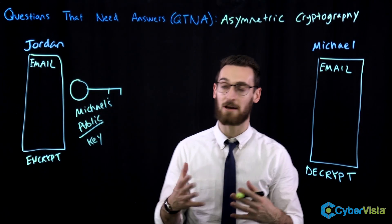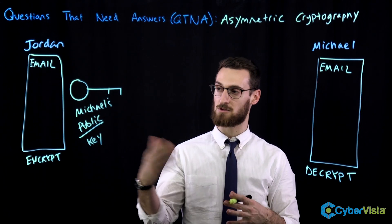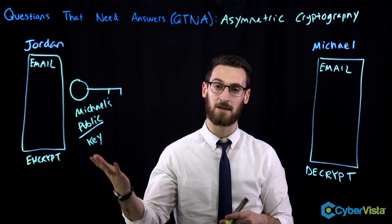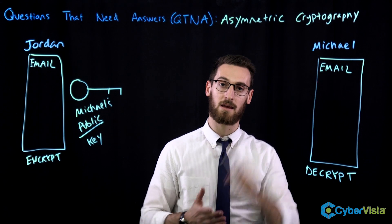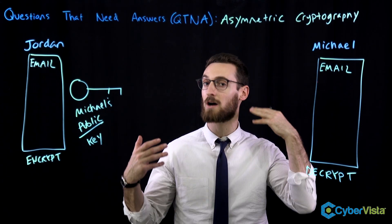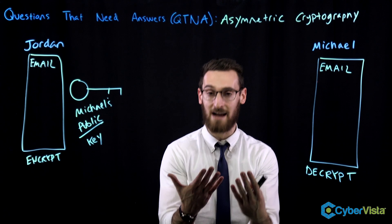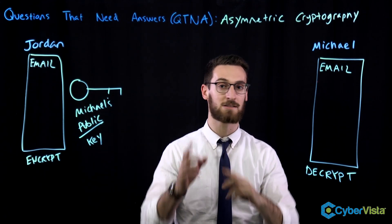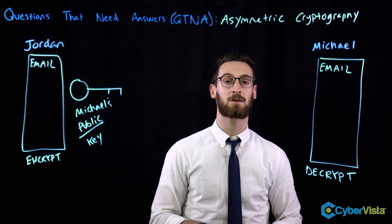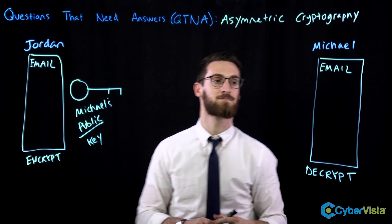Why does this matter? Because if one key encrypts, the other has to decrypt. So if we're going to encrypt with Michael's public key, we know that the only thing that could decrypt that email is Michael's private key. And who in the world is the only person who has Michael's private key? That's right — Michael.